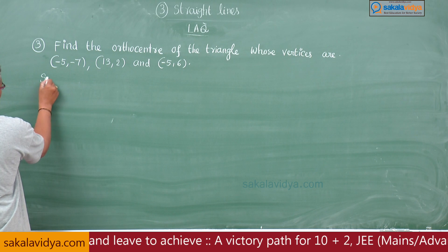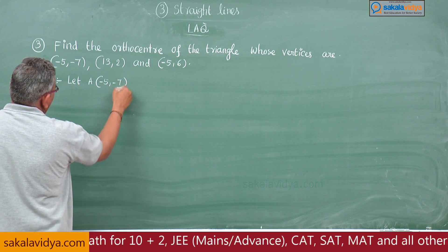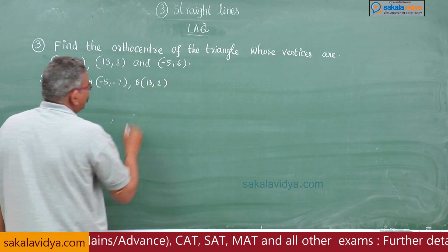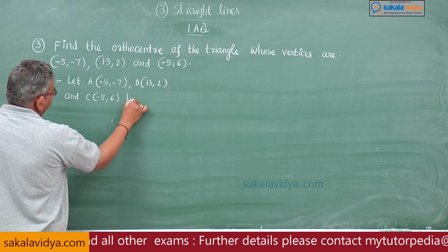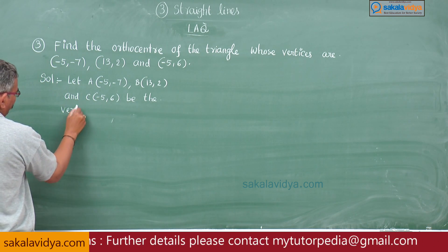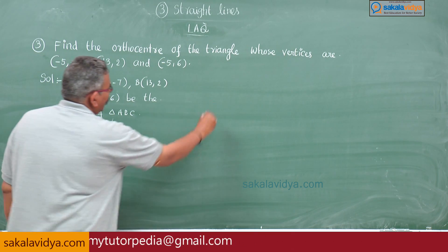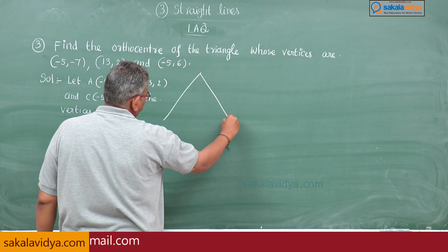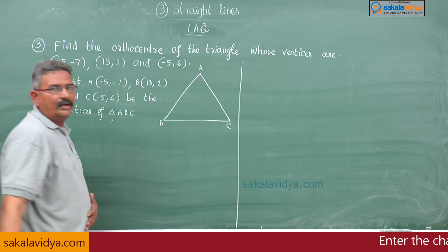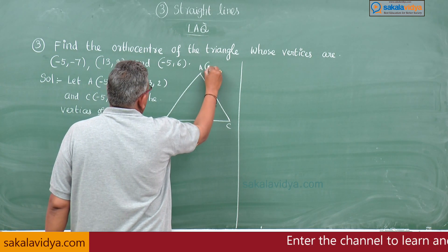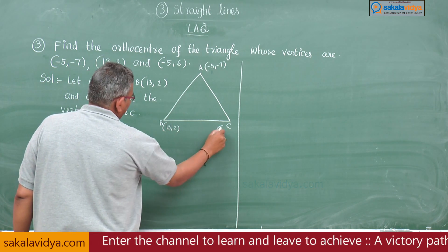Let A be minus 5 comma minus 7, B be 13 comma 2, and C be minus 5 comma 6 — the vertices of triangle ABC. Let us draw the figure.